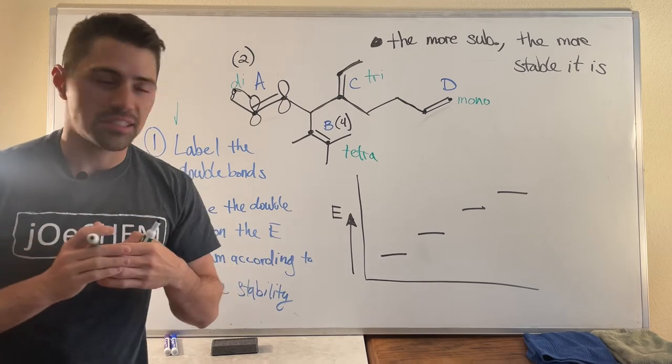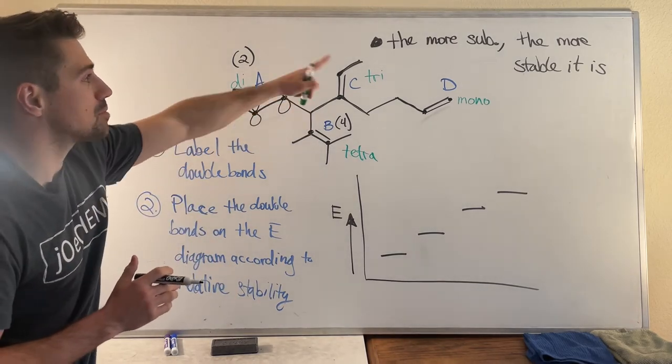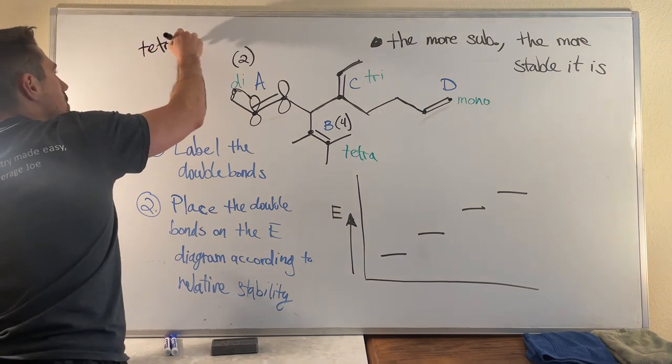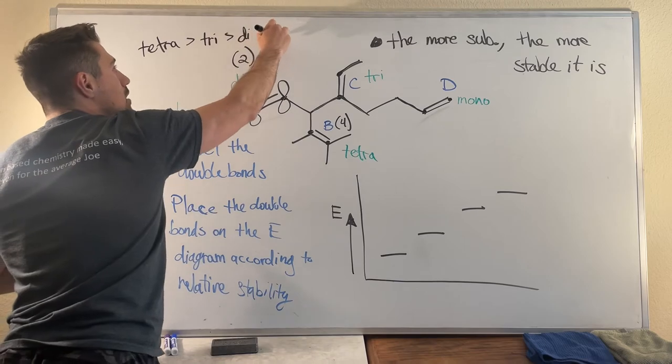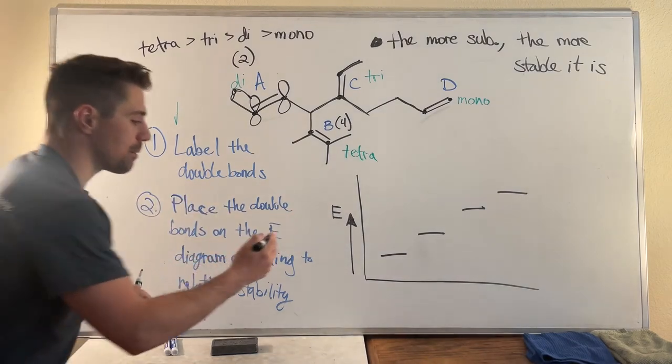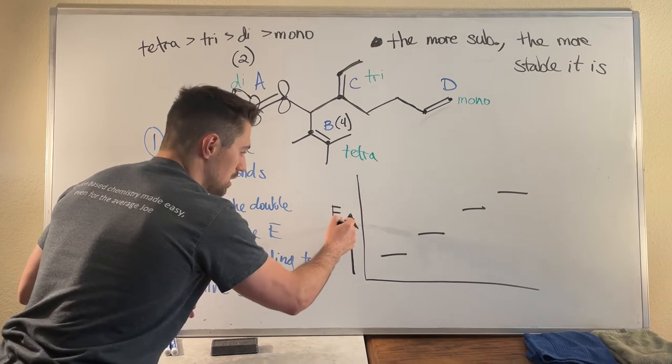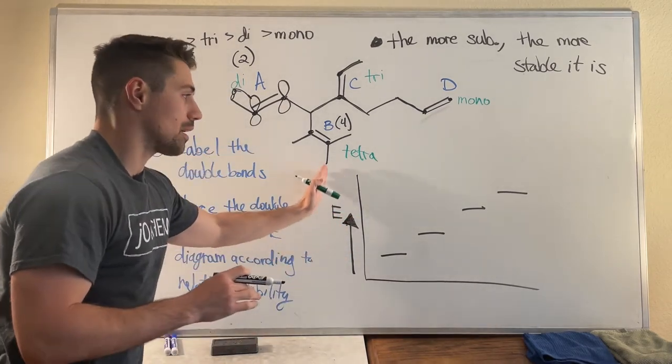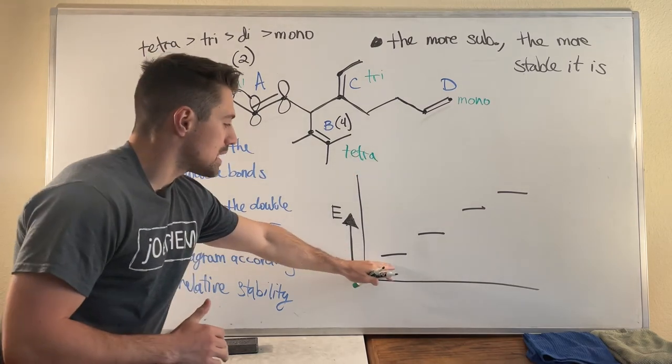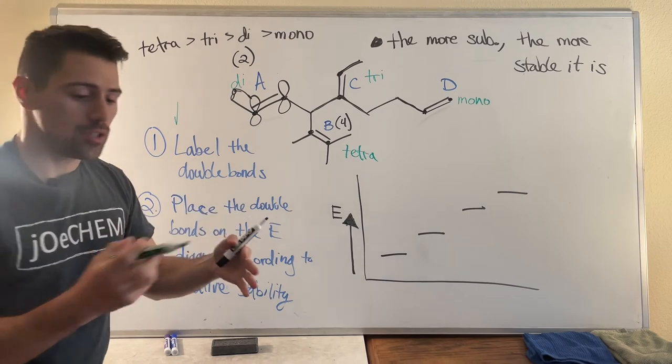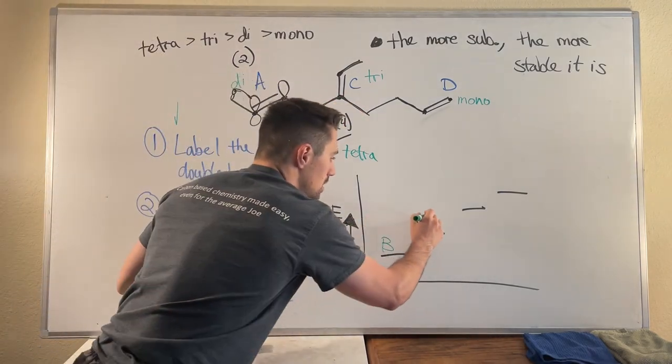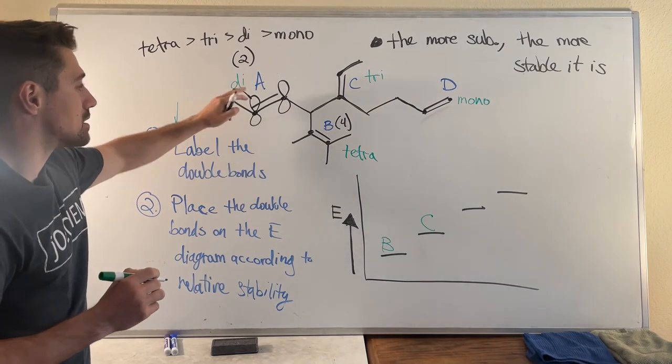However the most important thing is the more substituted your double bond is the more stable it is. So that is to say that tetra substituted double bonds are going to be more stable than tri, more stable than di, more stable than mono. These are greater than symbols. So if we want to rank them on an energy diagram, remember when we go up on an energy diagram that means something has more energy, that means it's more unstable. So as you go up on an energy diagram you have more energy, you're more unstable. So down here is our stable stuff and up here is our most unstable stuff. So the most stable double bond we have here will be B, that is our tetra substituted double bond. It has the most neighbors, it's the most stable. Then next will be our tri substituted double bond so we'll put C right here. Then we'll have our di substituted double bond A, and then last but not least the mono substituted double bond D.